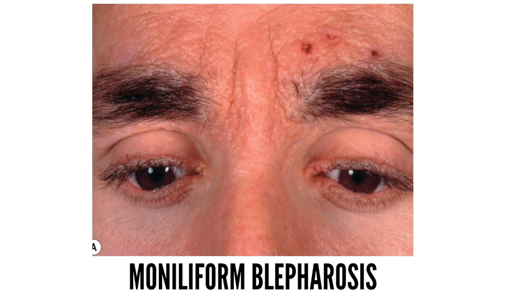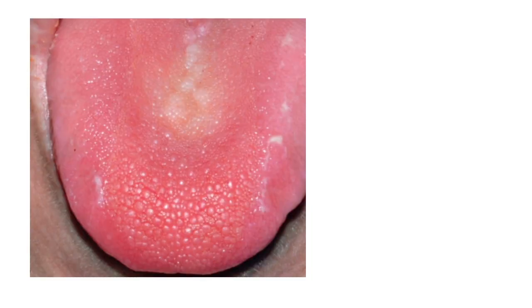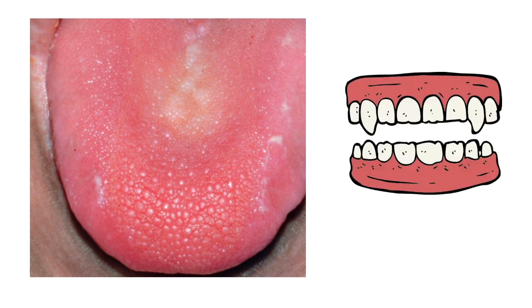Verrucous lesions may develop on the extensor surfaces, especially the elbows, knees, and hands. Lip scaling and alopecia of the eyebrows and eyelashes have also been observed. In the oral mucosa, there is involvement of the tongue in the form of diffuse infiltration, and involvement of the frenulum leading to restricted motion of the tongue. Recurrent parotitis can occur due to secondary occlusion of the salivary duct. Dental anomalies include hyperplasia or aplasia of the upper incisors, premolars, or molars, and patients usually lose their teeth at an early age.